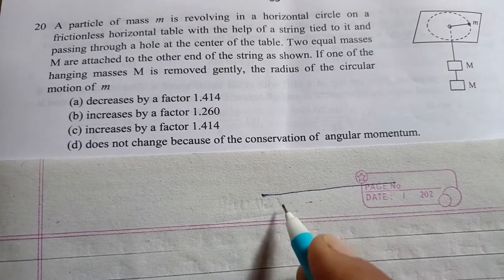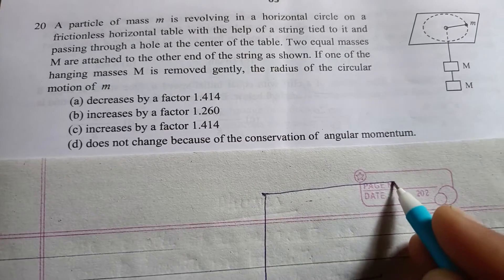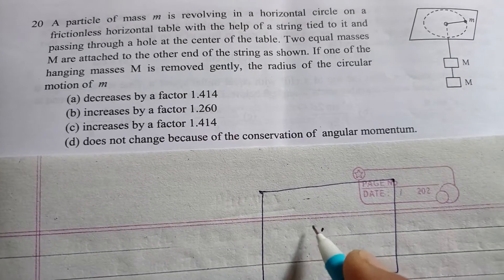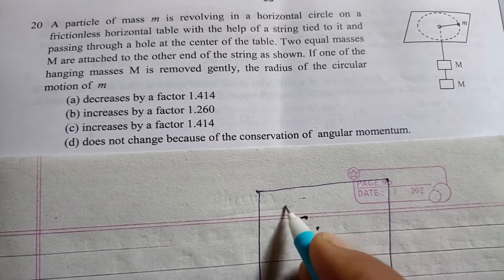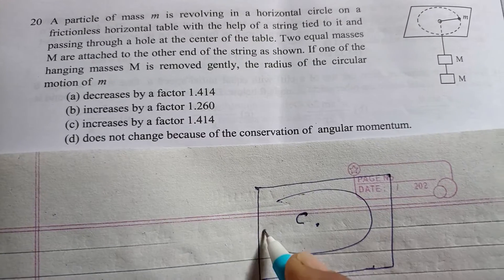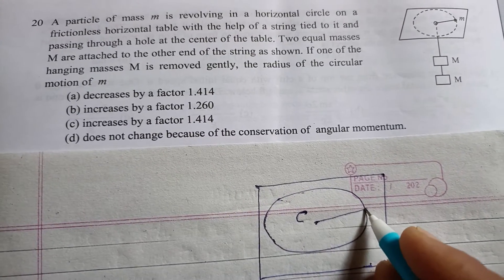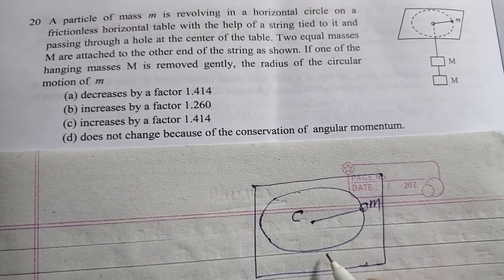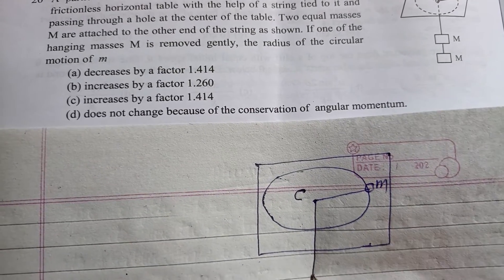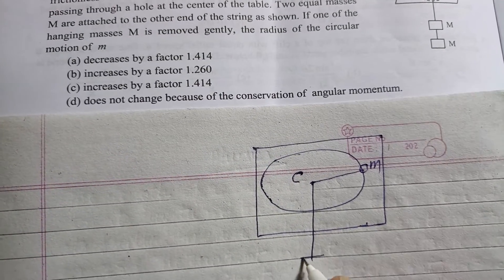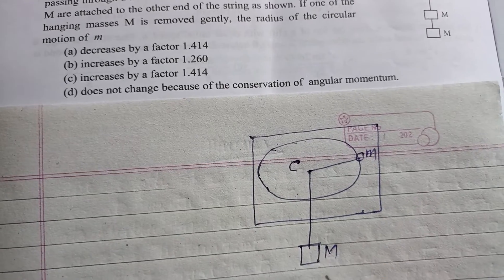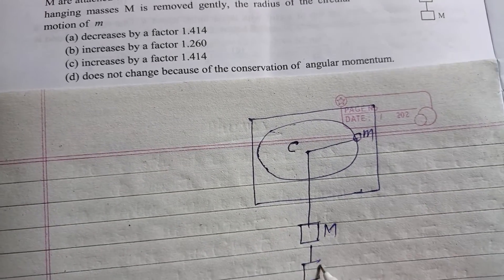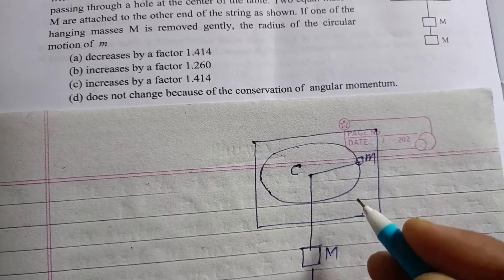So this is the table, its center is C, and this is the circle and this is the mass m, and this is passing through a hole and two masses of capital M are hanging with this.